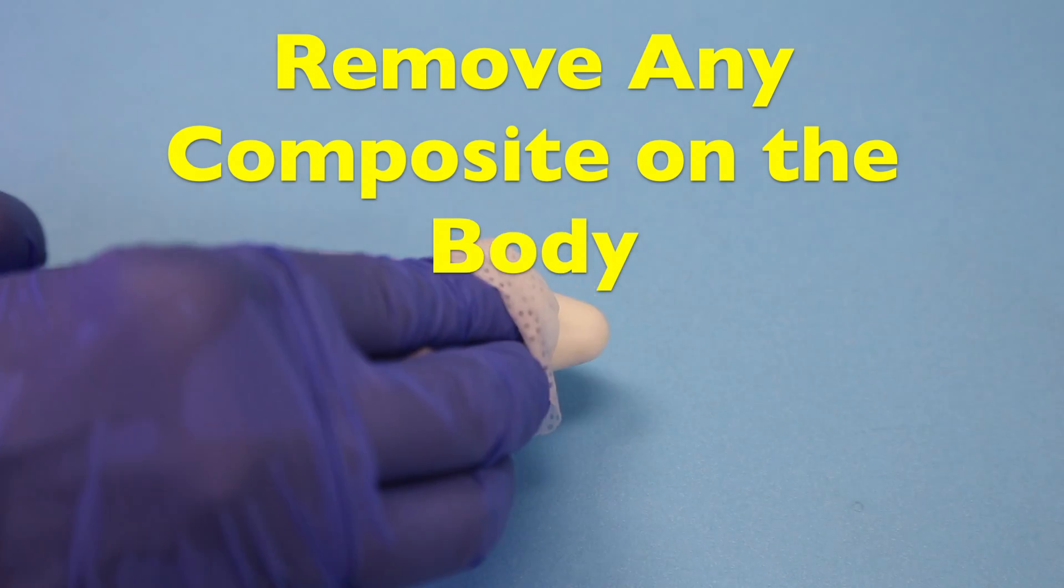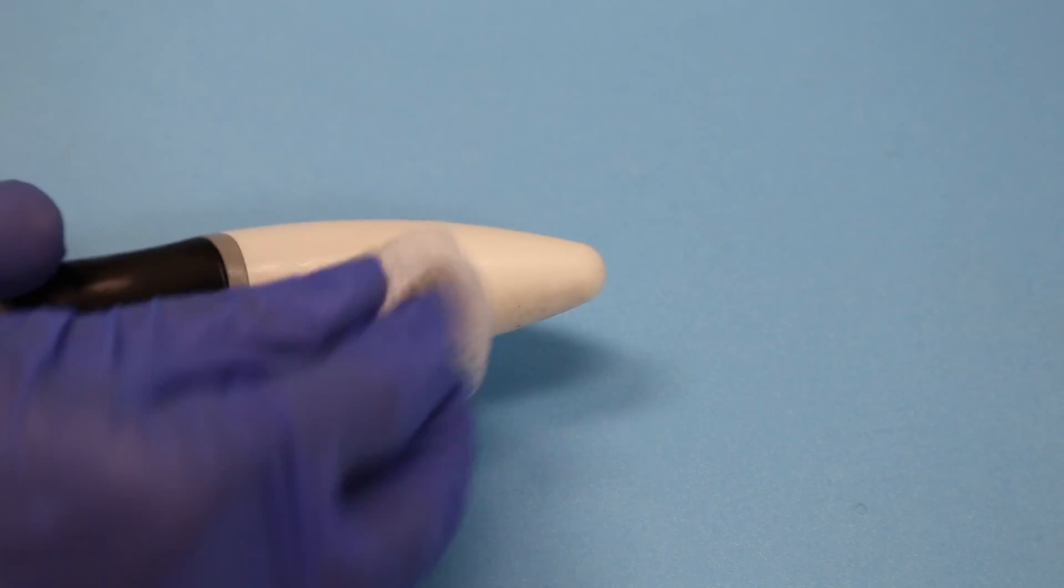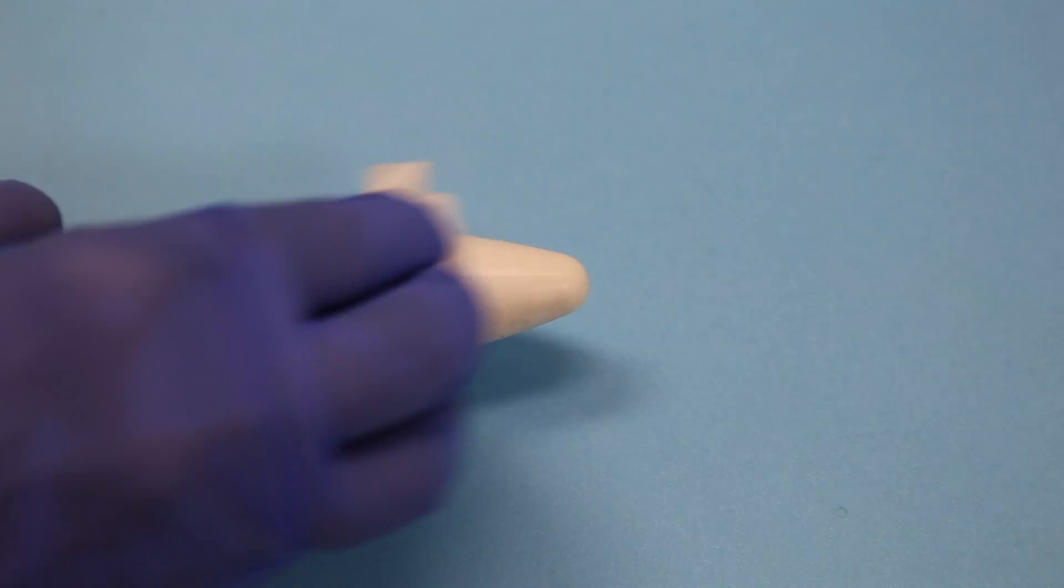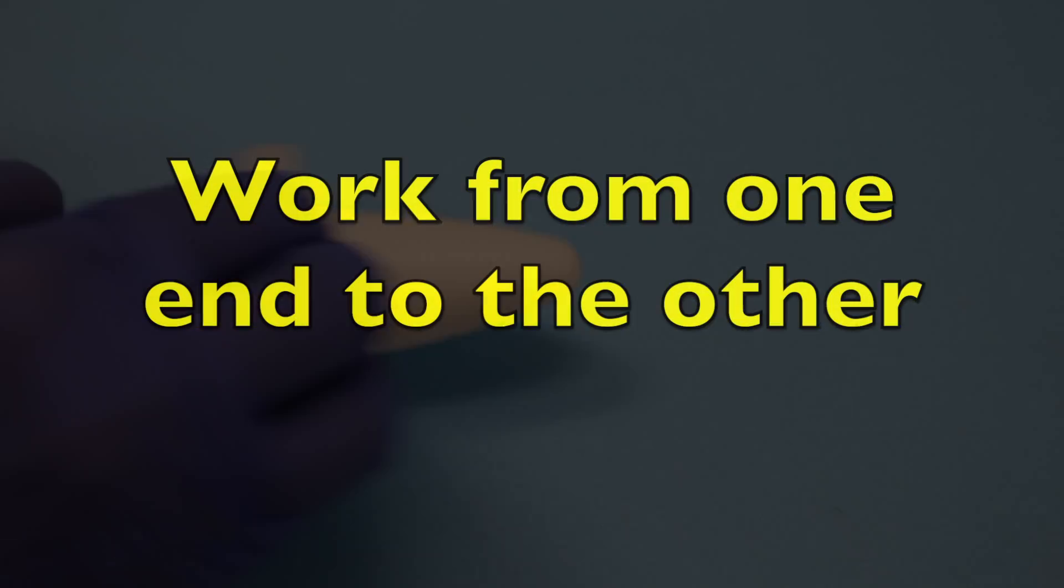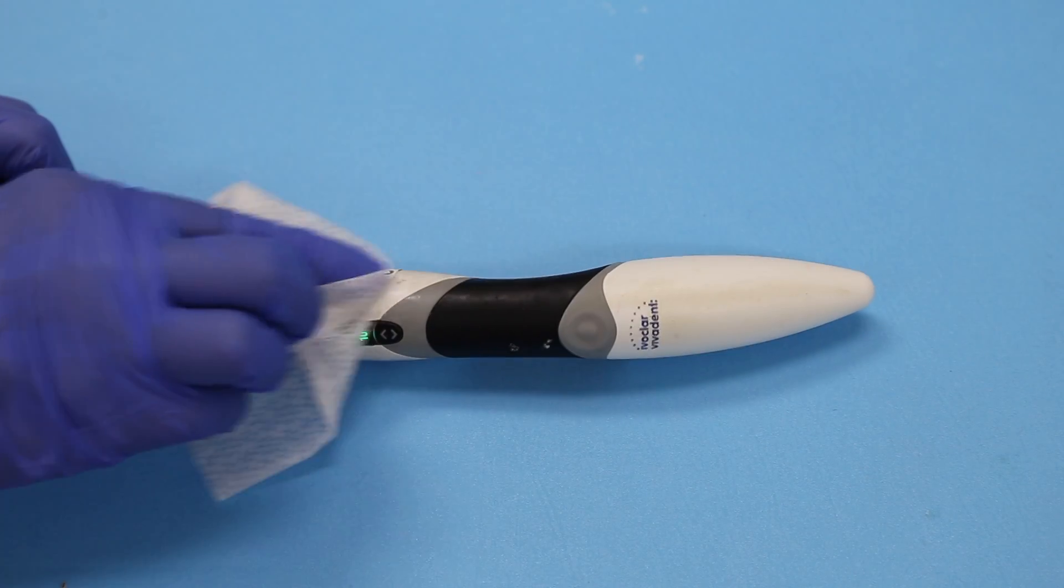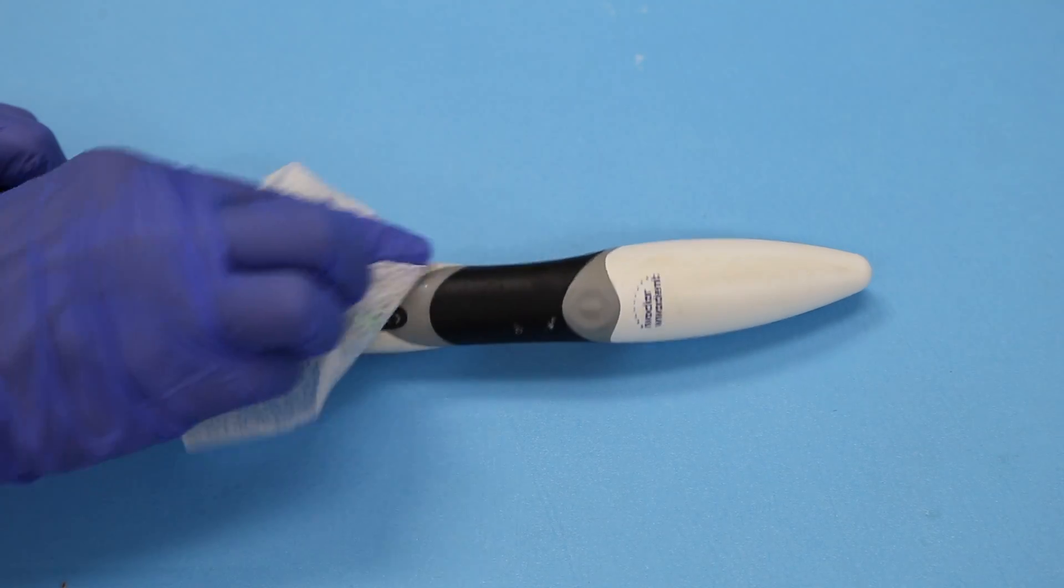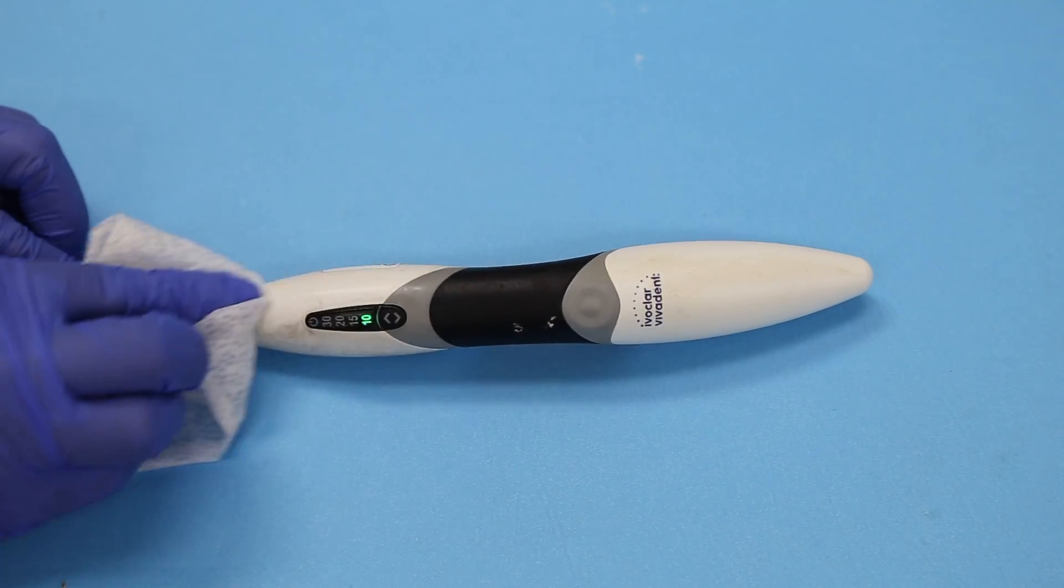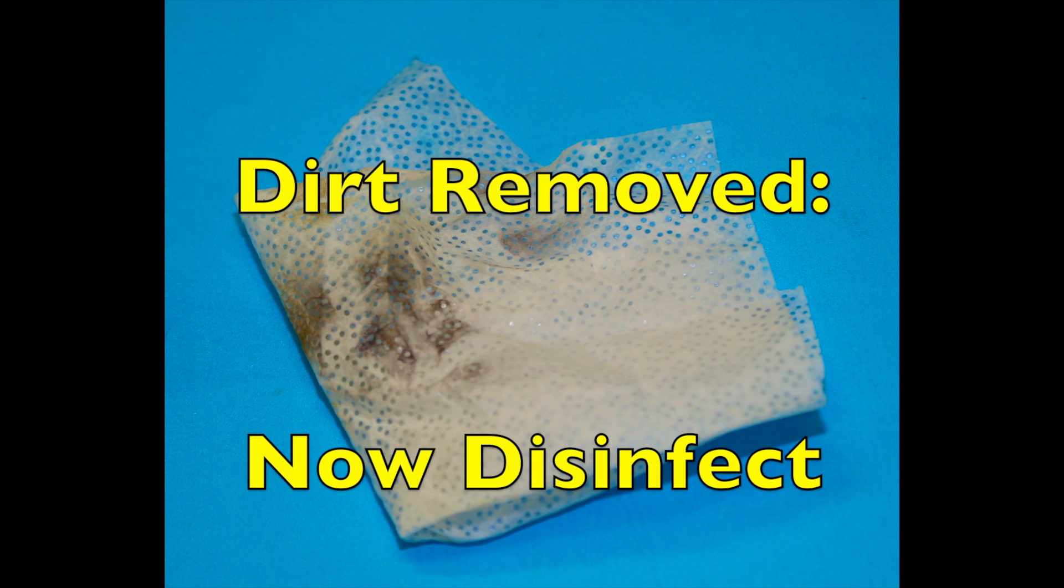If there's any composite on the body of the light, then we just rub the surface a little bit harder and usually the composite just comes right off. Work methodically from one end of the light to the other. Pay careful attention around the buttons and also around any joint areas where debris may have collected. Look at the debris that was removed from this light.